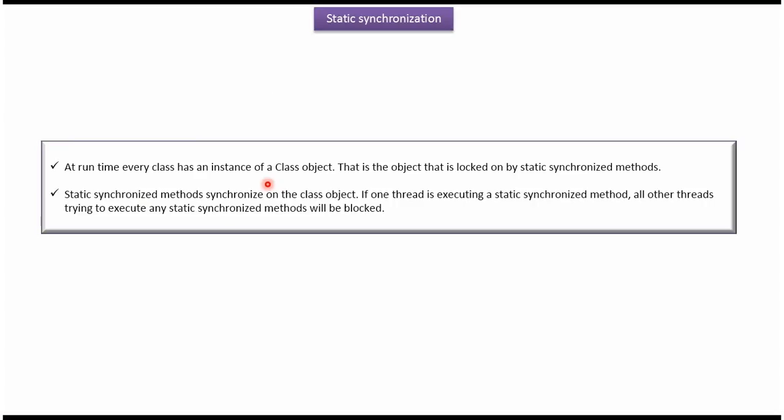At runtime every class has an instance of a Class object, and that is the object that is locked on by static synchronized methods. Static synchronized methods synchronize on the class object. If one thread is executing a static synchronized method, all other threads trying to execute any static synchronized methods will be blocked. That is about static synchronization — thanks for watching.